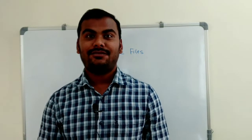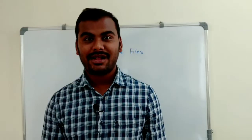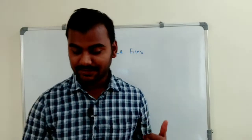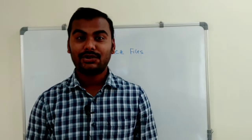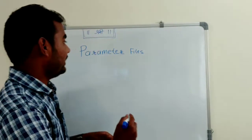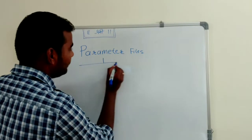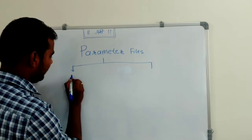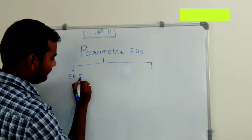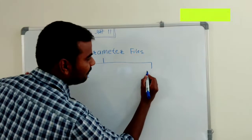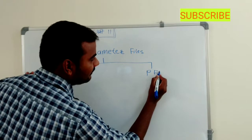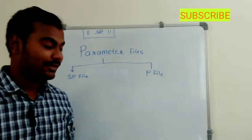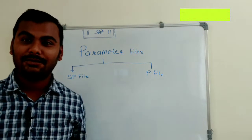We have two kinds of parameter files in our Oracle databases. Here you can see the headline 'Parameter Files'. As I said, we have two kinds of parameter files. The first one is our SPfile and the second one is our PFile. You might ask: what is the difference between these two files?